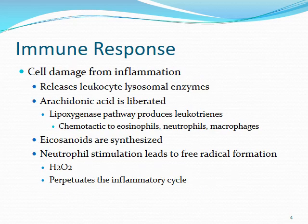Cell damage from inflammation leads to release of leukocyte lysosomal enzymes, which can damage neighboring cells. Arachidonic acid is also liberated — we've discussed this with anti-inflammatory agents and asthma. Specifically, the lipoxygenase pathway produces leukotrienes, which are chemotactic to eosinophils, neutrophils, and macrophages, bringing in many immune cells to attack whatever the body has identified as foreign.